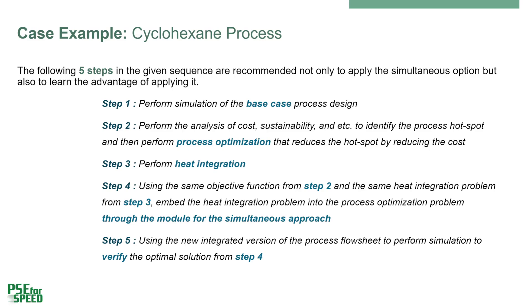We propose the following step-by-step workflow for applying simultaneous process optimization and heat integration. These steps can be applied for process design problems that have an identified process hotspot. The sequential order of the steps also helps to understand the advantages of using the simultaneous option. Step 1: Perform simulation of the best-case process design, that is, the initial process flowsheet. Step 2: Perform the analysis of cost, sustainability, etc. to identify the process hotspot, and then perform the process optimization that reduces the hotspot by reducing the cost.